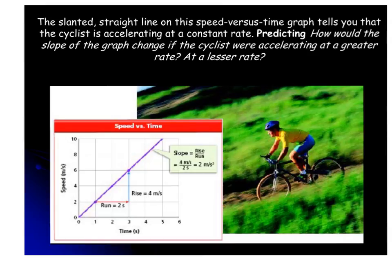In this graph, we can tell that the cyclist is increasing in speed at a constant rate. Now, if it was even a steeper slope on this line, we would know that they were actually accelerating even at a greater rate. So the more steep that the slope is, the higher that acceleration is.